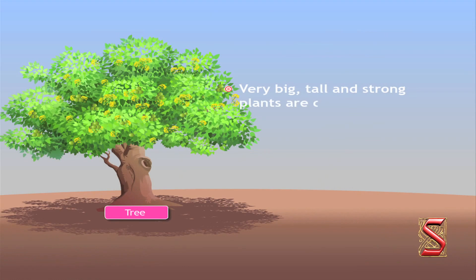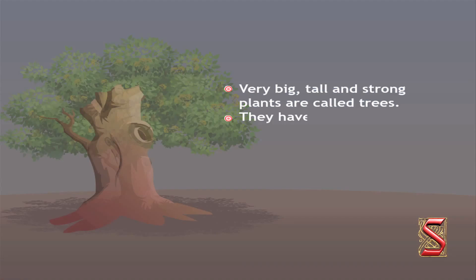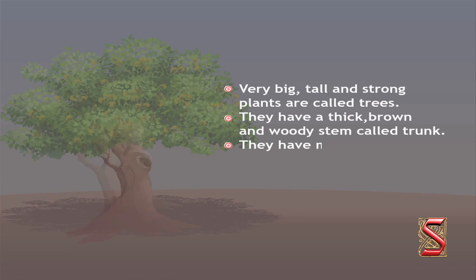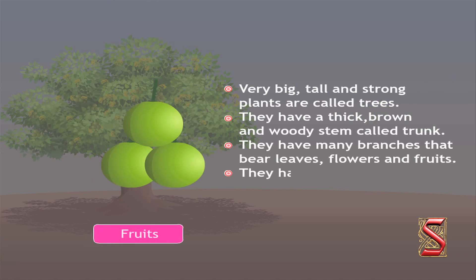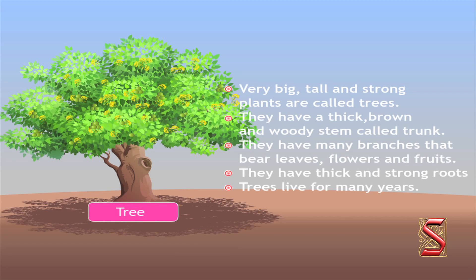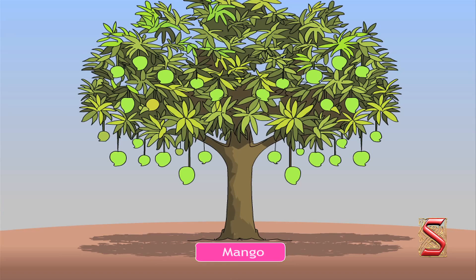Very big, tall and strong plants are called trees. They have thick, brown and woody stem called trunk. They have many branches that bear leaves, flowers and fruits. They have thick and strong roots. Trees live for many years. Some examples of trees are neem tree and mango tree.